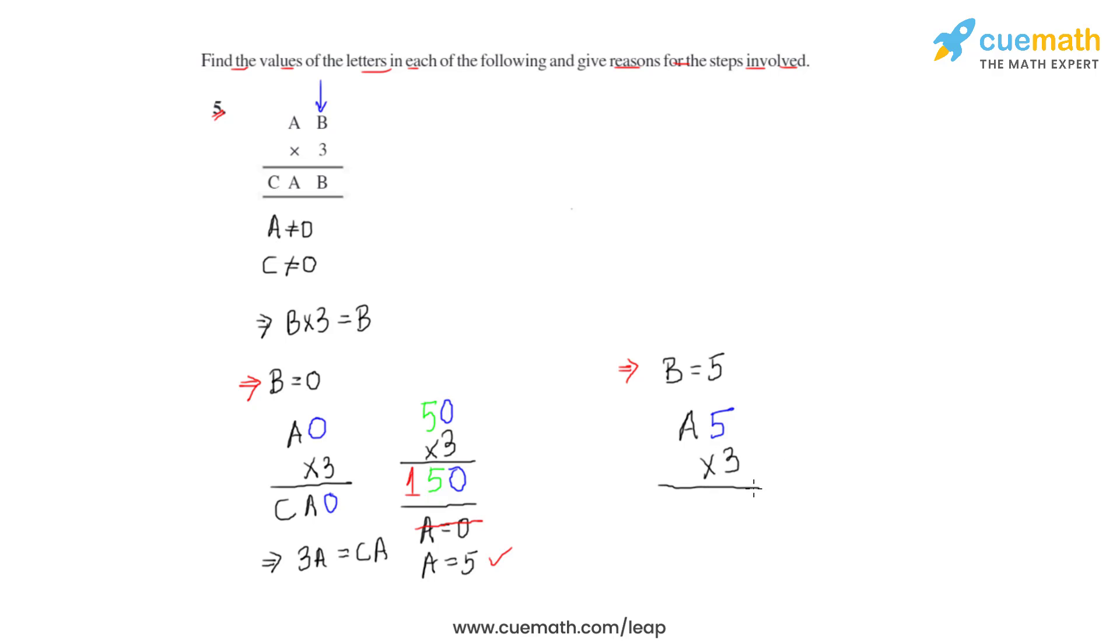the result should be CA5. We already know that 5 times 3 is 15, so the 5 is written here and 1 would be a carry. If we take this product forward, we'll see that 3 times A plus 1 gives us CA.